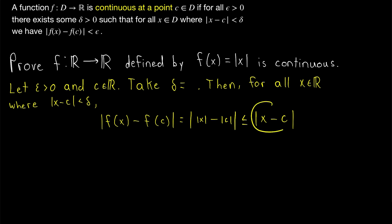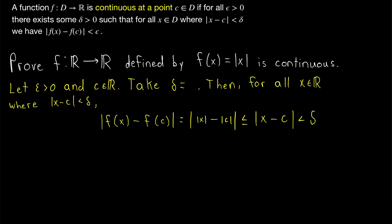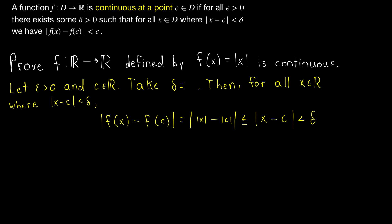We know that the absolute value of x minus c is going to be less than delta, because we're only considering x values where the absolute value of x minus c is less than delta. So if we want this to be less than epsilon, what should we set delta equal to? Clearly, setting delta equal to epsilon will make the proof work.